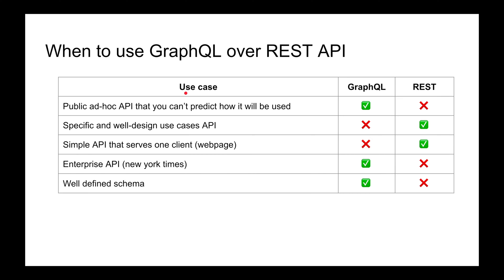The first use case is a public, ad-hoc API that you cannot predict how it will be used. If you're building an API and you have no idea how the user interface will look, or you're predicting the API will be public and used in unpredictable ways — like a SQL-style query where anything goes — then I would prefer GraphQL. I think GraphQL fits better here.